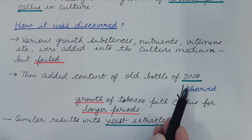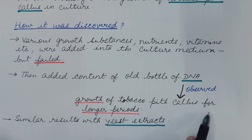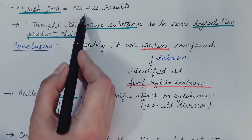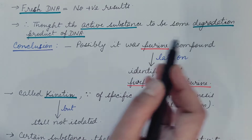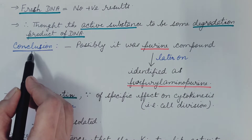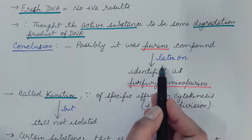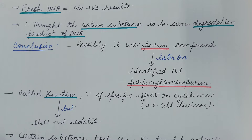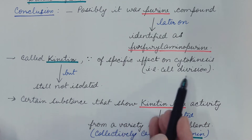Then they added the content of an old bottle of DNA present in the lab and observed growth of tobacco pith callus for longer periods. Later on, similar results were obtained with yeast extracts, but with fresh DNA, no positive results were seen. Therefore, they thought the active substance to be some degradation product of DNA, and they concluded that possibly it was a purine compound. Later on, it was identified as furfuryl amino purine. It was called kinetin because of its specific effect on cytokinesis, that is, cell division.